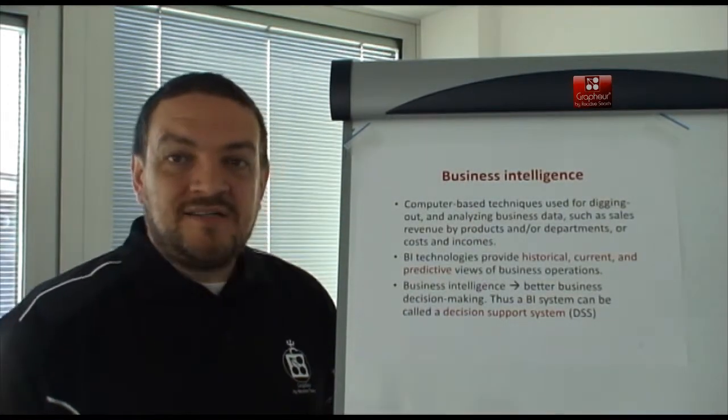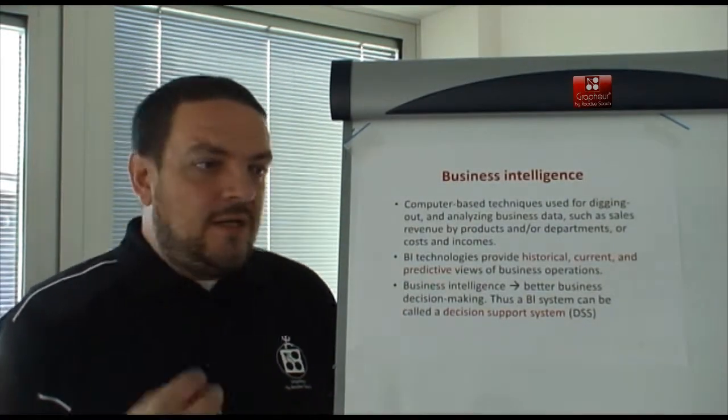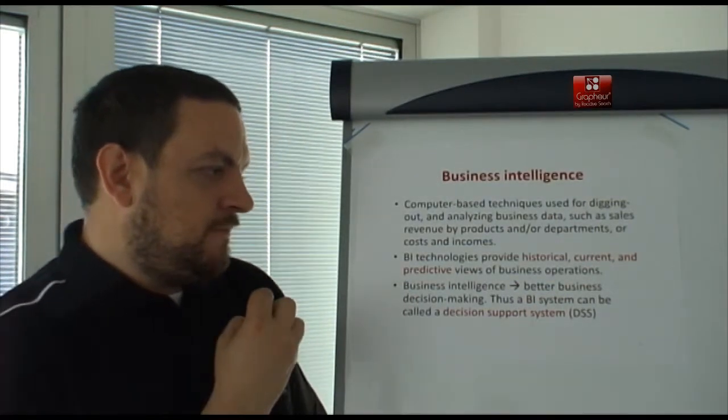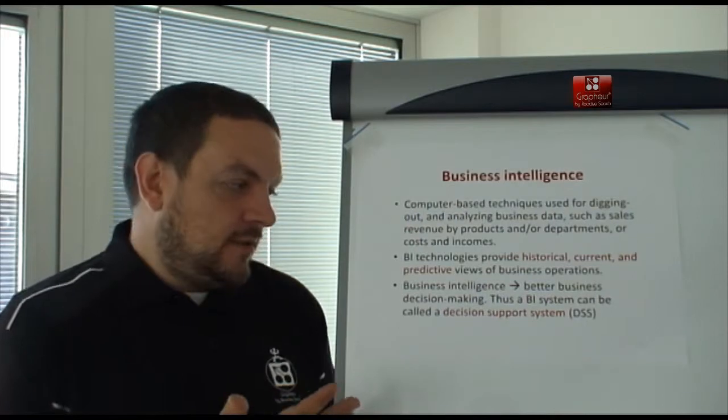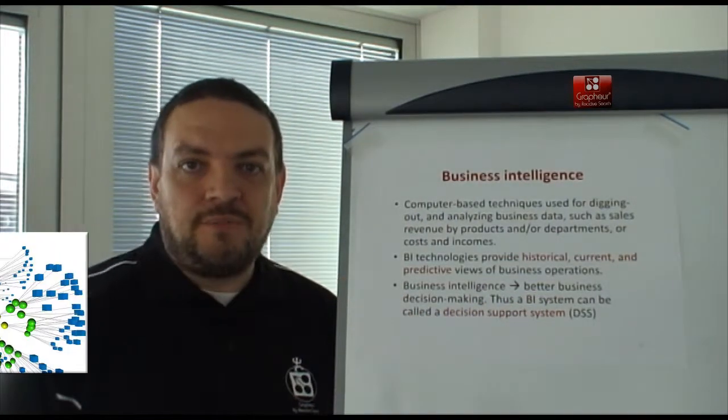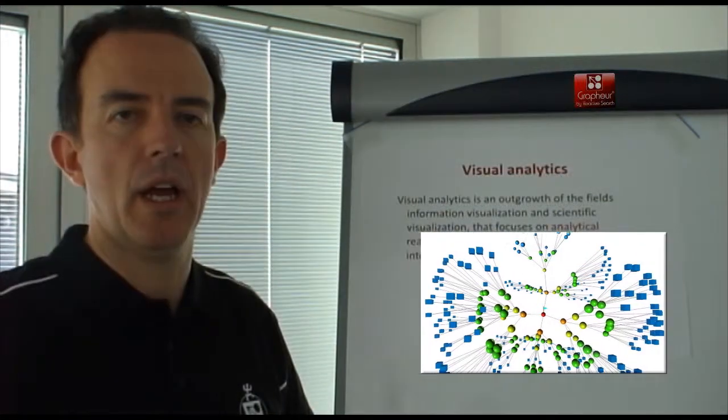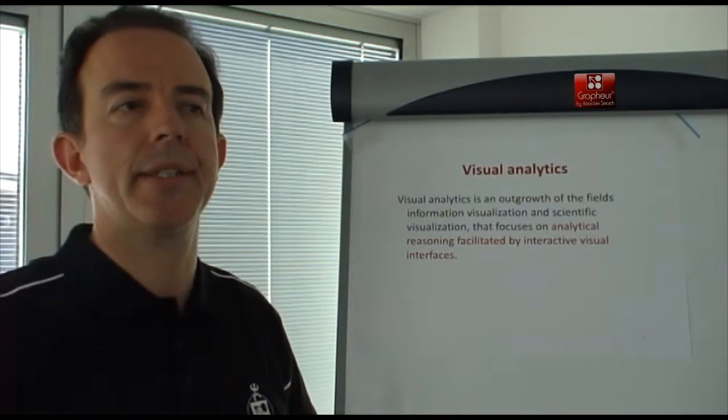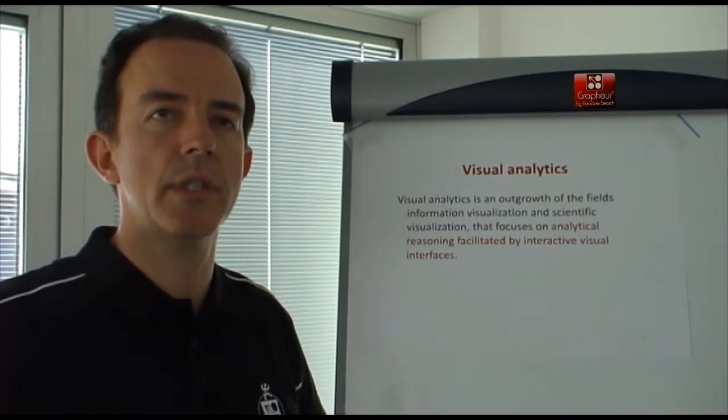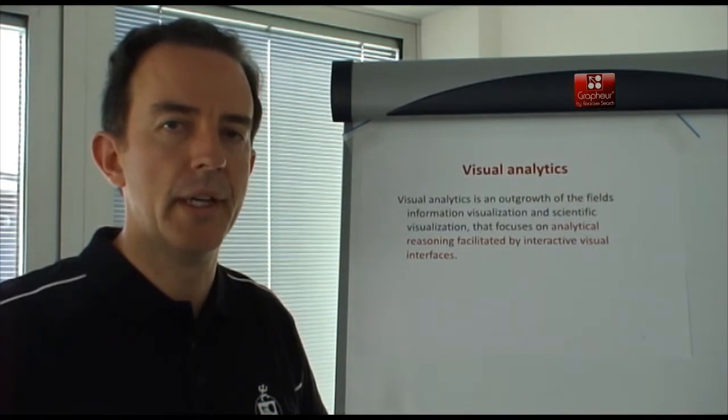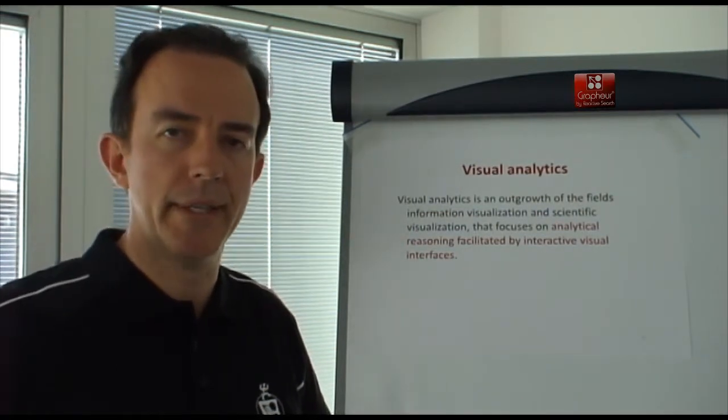The second ingredient we need is business intelligence. After collecting data, extracting information from it, we can use business intelligence to improve our decision making. So business intelligence system can also be called a decision support system. A third ingredient is called visual analytics. This means using your visual system in order to help your reasoning, help your thinking about your data.